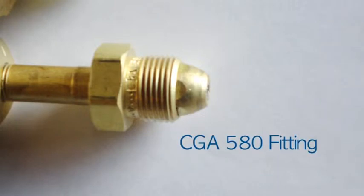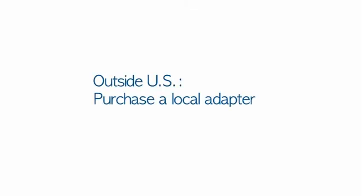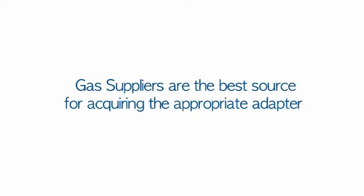For connecting the pressurized air tank, a CGA 580 fitting is typical for inert gases in the U.S. Outside of the U.S., you may need an adapter that can be purchased locally. Regional variations make your gas supplier the best source for acquiring the appropriate adapter.